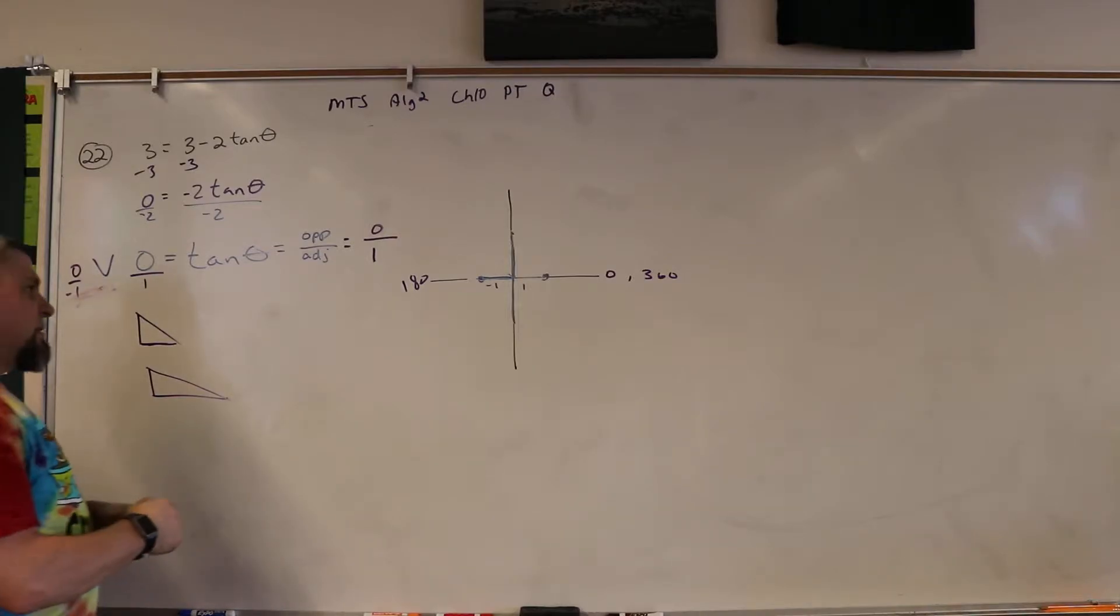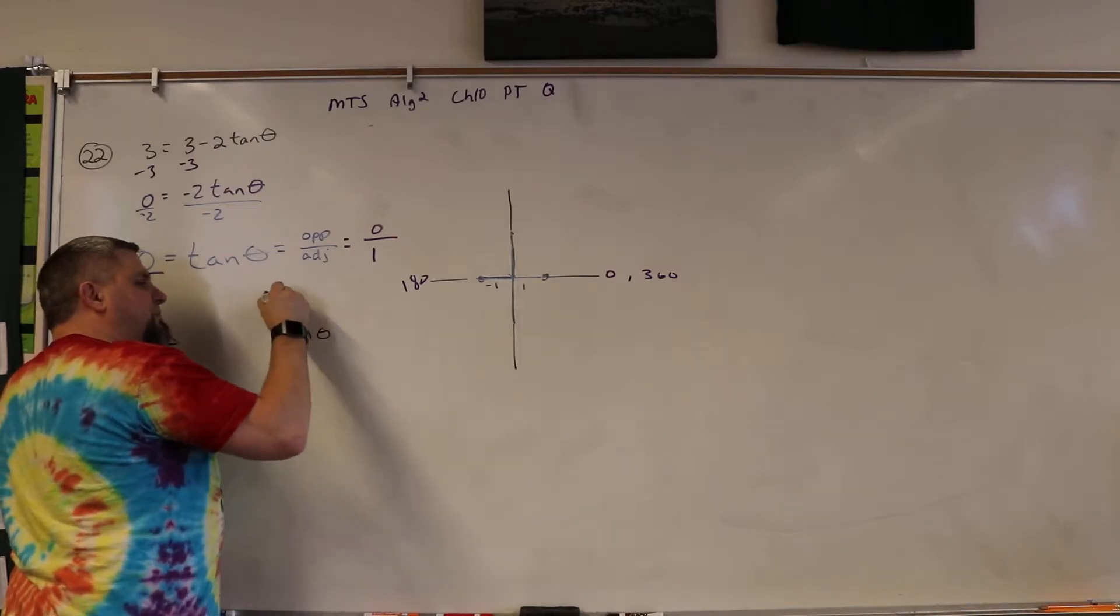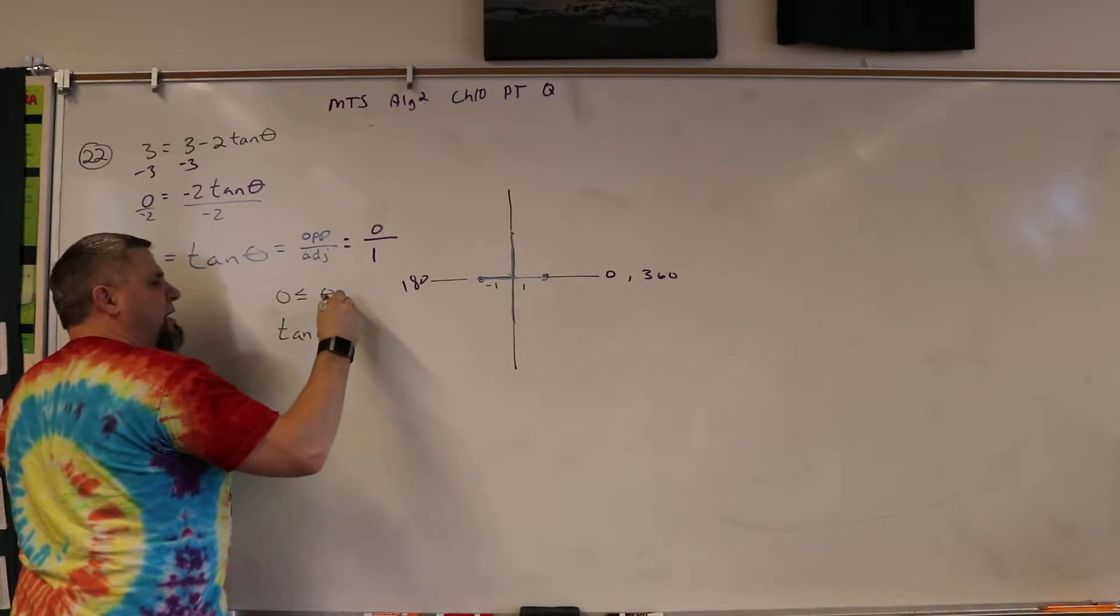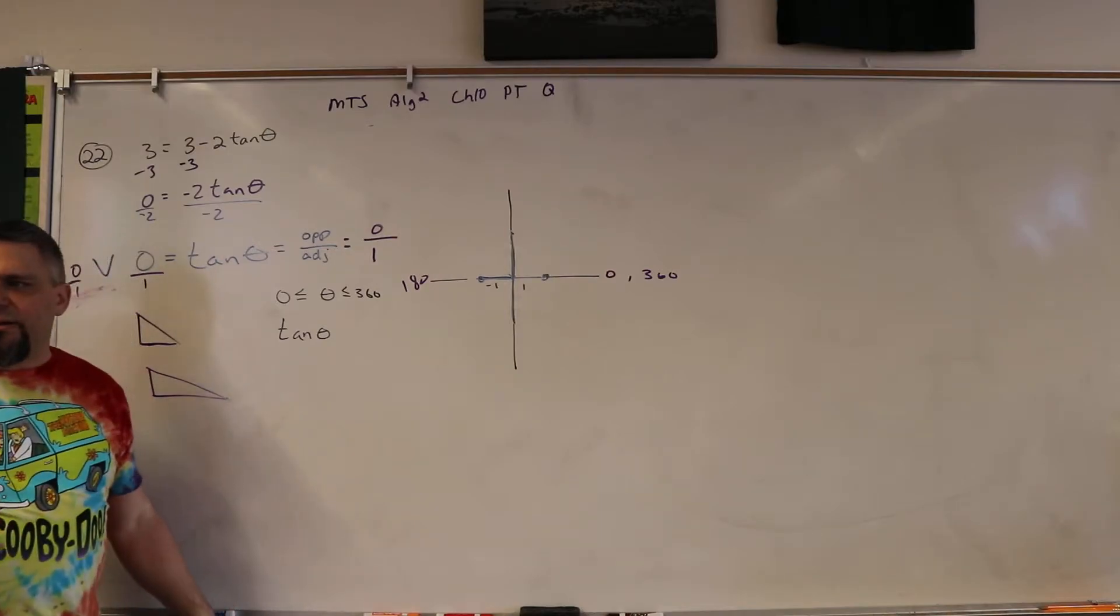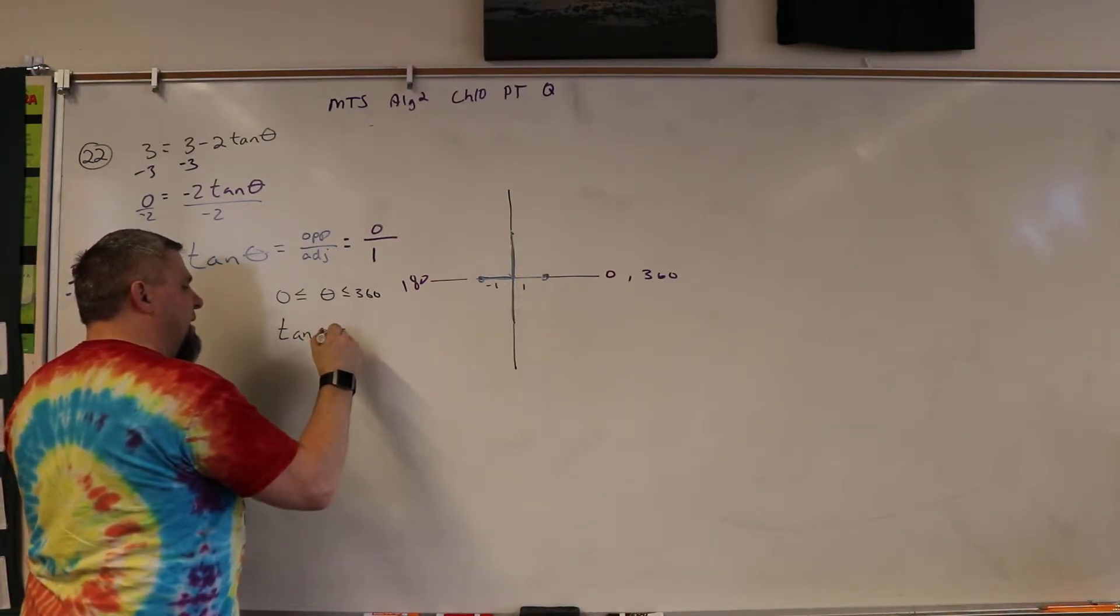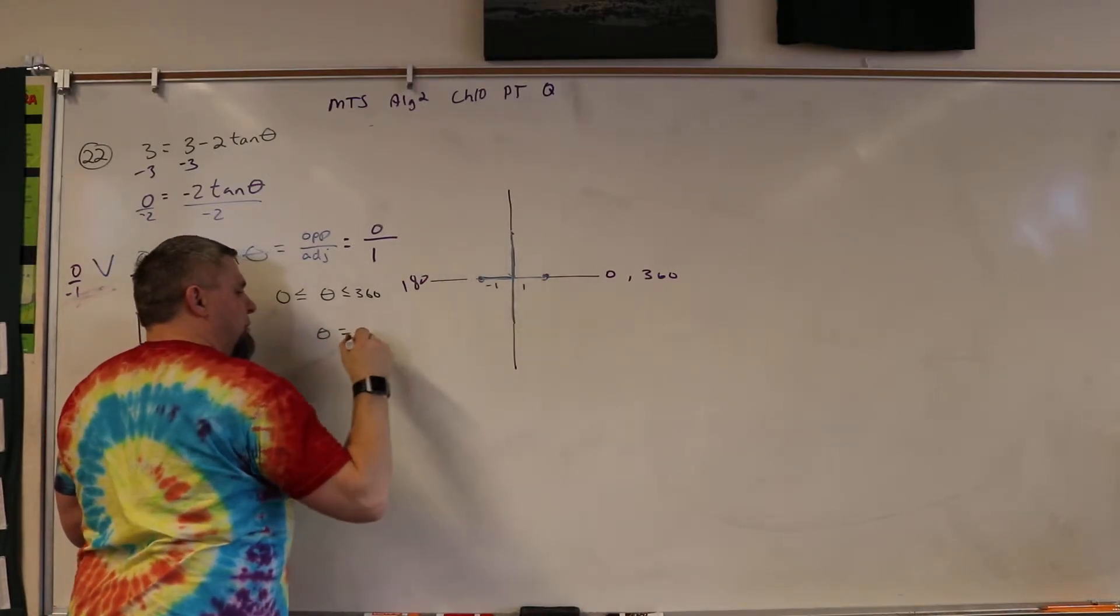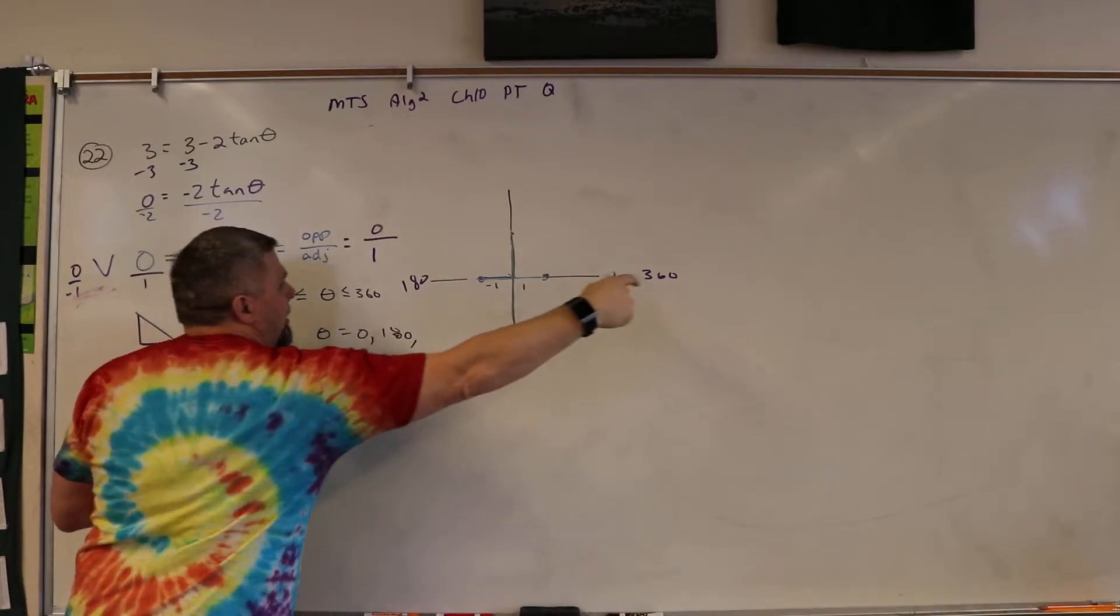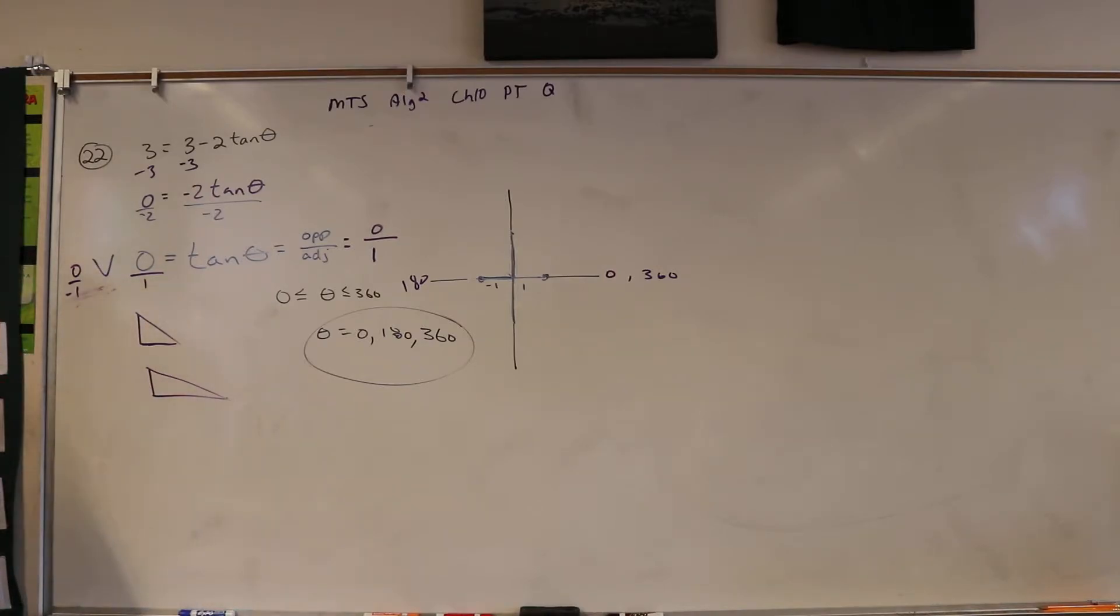So in that case, we're either going to have 180 or zero or 360. Does that make sense? All of those will give us the same thing. So the tangent on a scale from zero to 180, they're saying theta is greater than or equal to zero, less than or equal to 360, right? That means that theta could equal zero, 180, or 360. Could be all three of those. Does that make sense? A little. A little bit.